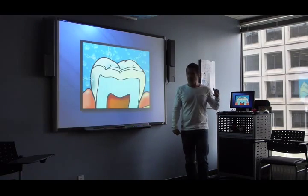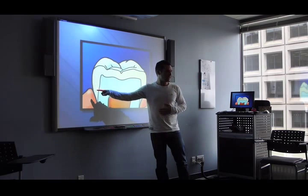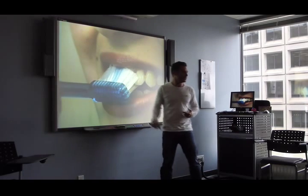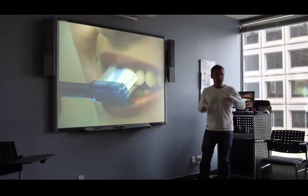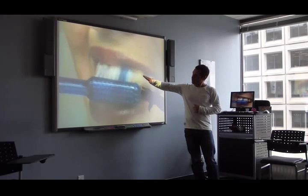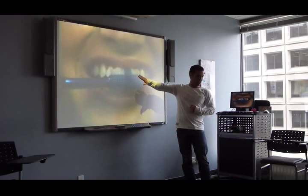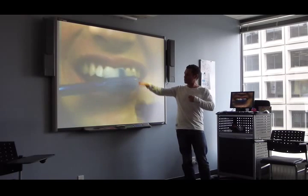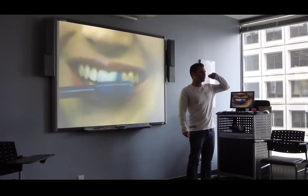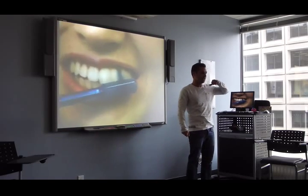Doing a rotation movement to remove the bacteria and the plaque between your teeth and your gum — in this area — because decay or gum disease starts in this area, at the limit of the gum and the teeth. So incline your brush 45 degrees and start the rotation.